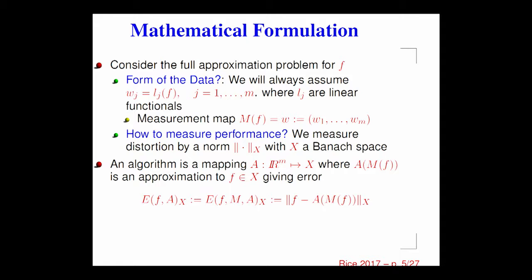You're going to create an approximation to f from the data, and I'm going to create one. We're going to check which one is closer in this norm. The information we have about f is these measurements, which are numbers. I apply these linear functionals and get a number — for example, the fourth Fourier coefficient. An algorithm is a mapping that takes this data, these numbers, and maps it into a function. I measure performance of the algorithm on a given f by how far the approximation it creates from the data differs from f.